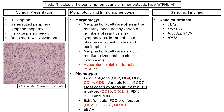Phenotypically, AITL expresses pan-T cell markers CD2, CD3, CD5, and usually CD4-positive, CD8-negative, with variable loss of CD7. Most cases express at least two T follicular helper markers; CD10 and CXCL13 are considered the most specific. There is also extrafollicular follicular dendritic cell proliferation highlighted by CD21, CD23, and CD35. EBV is usually positive, and associated genetic mutations include TET2, DNMT3A, RhoA, and IDH2.